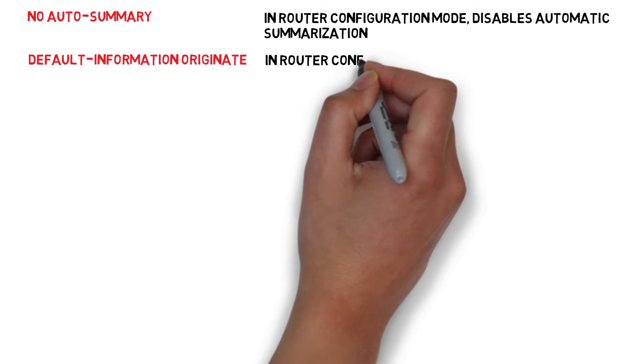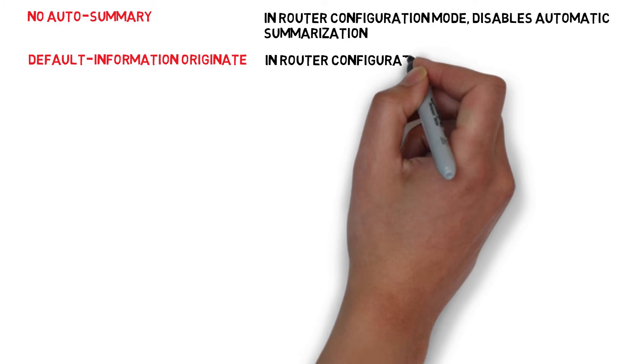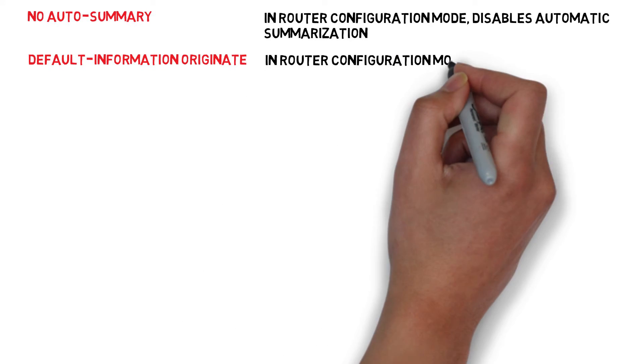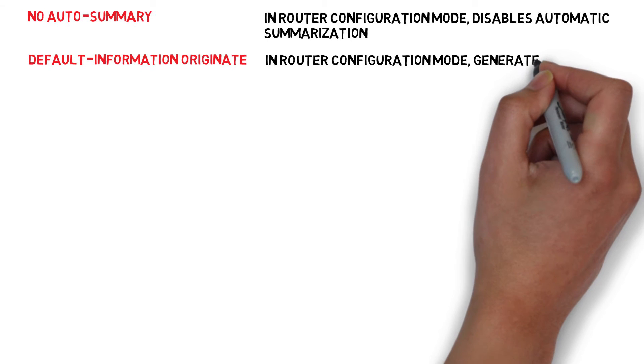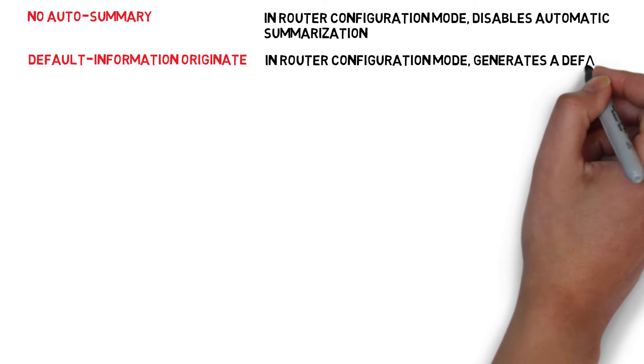Default Information Originate — in router configuration mode, generates a default route into RIP.